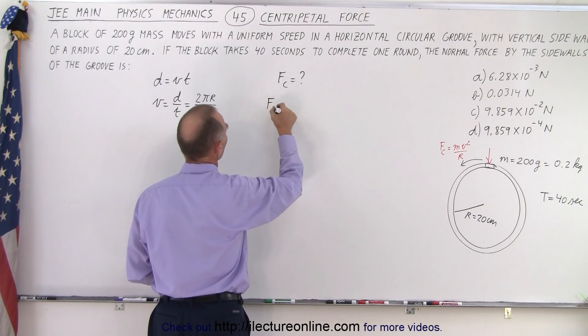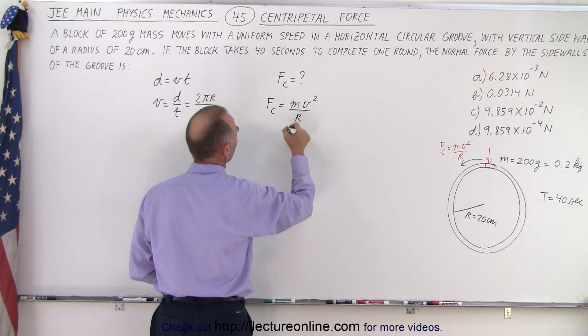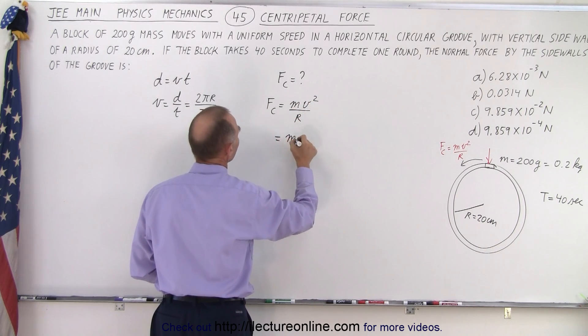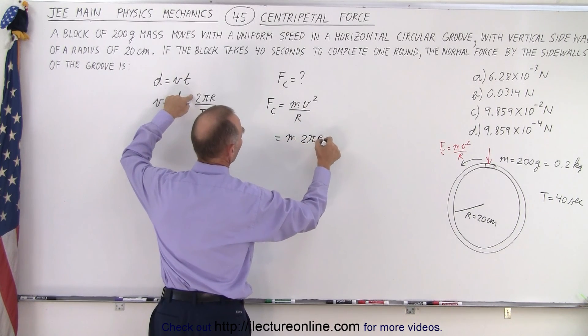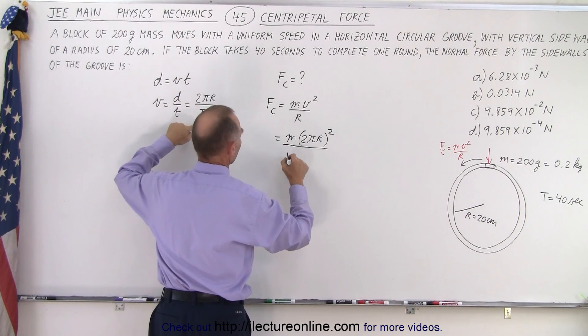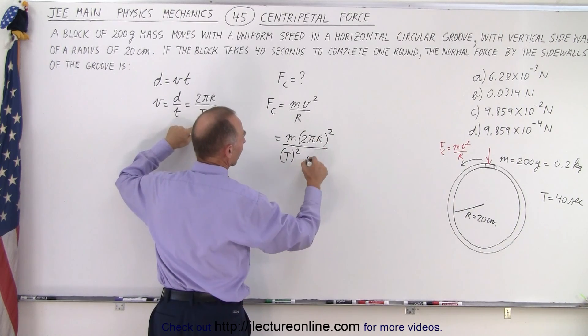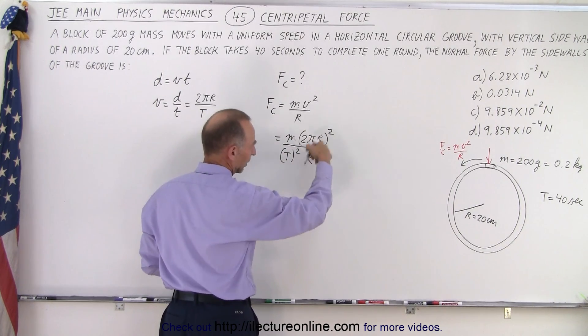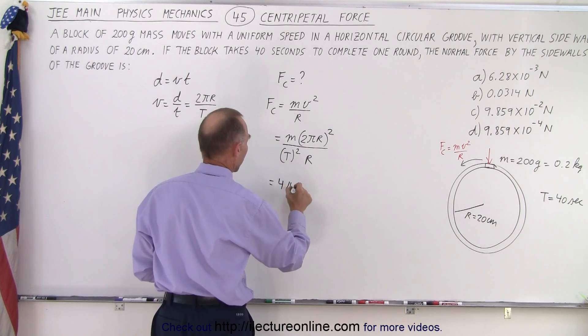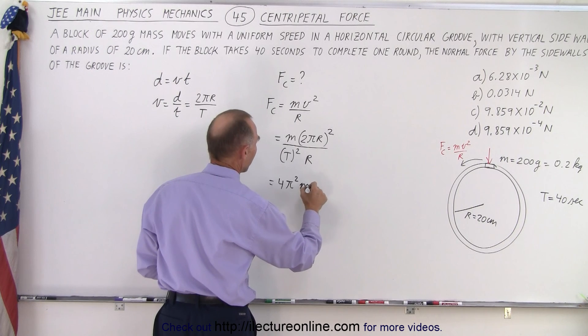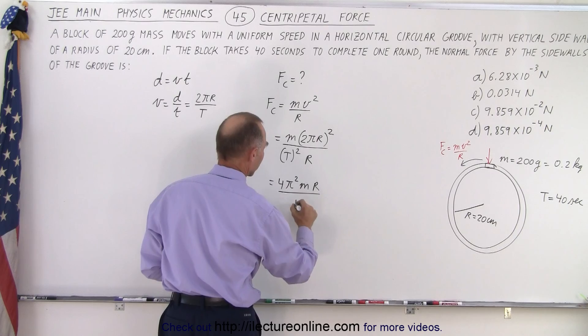So that means that the centripetal force is equal to m times v² over r. And so this would be m times v² is going to be 2πr quantity squared divided by the period squared. So that's v² divided by r. That means we can cancel out one of the r's. So that means that this is equal to 4π² times m times r to the first power, because we're going to cancel out with this r, divided by the period squared.